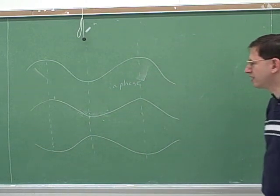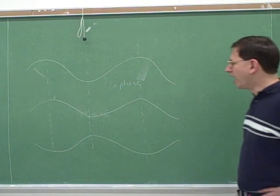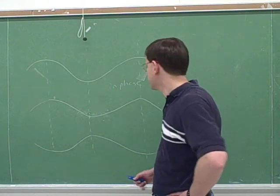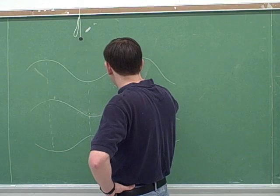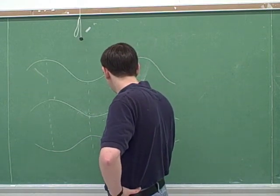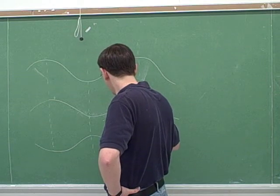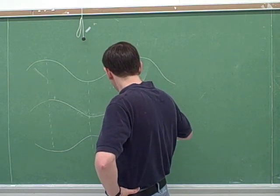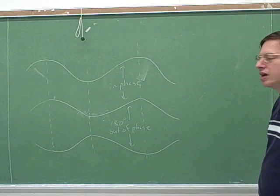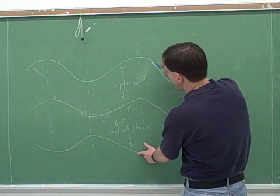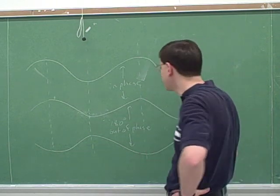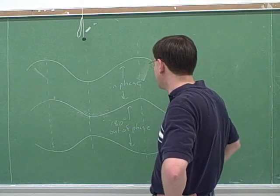How about these? Are these in phase? No. No. In fact, we would say that these are 180 degrees out of phase. So the top wave and the bottom wave are completely in phase. And the middle wave and the bottom wave are 180 degrees out of phase. What's the relationship then between the bottom wave and the top wave? Same thing. 180 degrees out of phase because these two are the same as each other. Okay. So those are some important ideas.